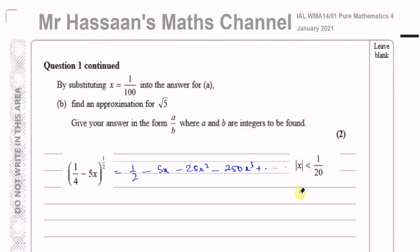Now for part B. By substituting x equals 1/100 into the answer for part A, find an approximation for the square root of 5, giving your answer in the form A over B where A and B are integers. First, note that x = 1/100 is valid because its magnitude is less than 1/20.